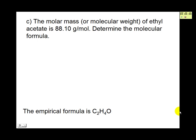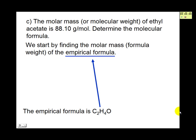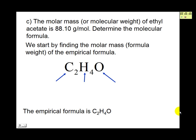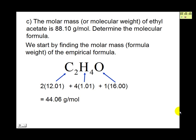The next part of this question is to find the molecular formula. We are told the molar mass of the actual compound is 88.10 grams per mole. We start by finding the molar mass of the empirical formula C2H4O. There are 2 atoms of C, so we write 2 times 12.01, plus 4 atoms of H times 1.01, plus 1 atom of O times 16. Adding these up gives us a total of 44.06 grams per mole — the empirical formula mass.